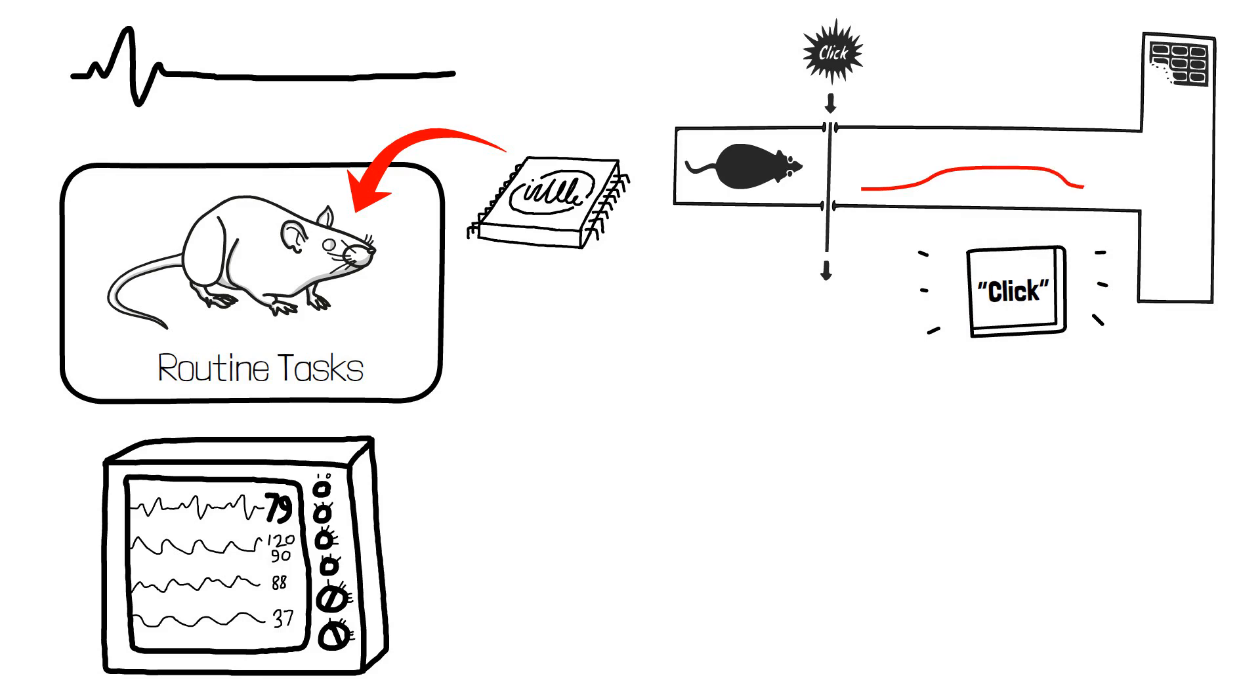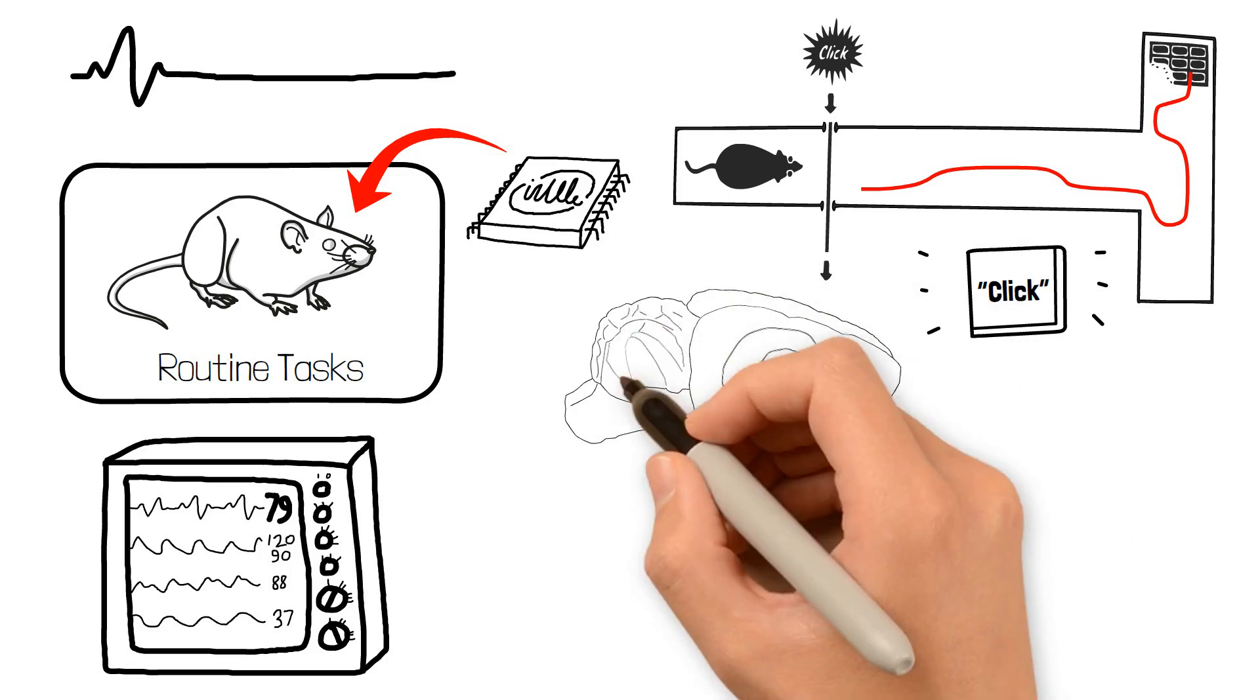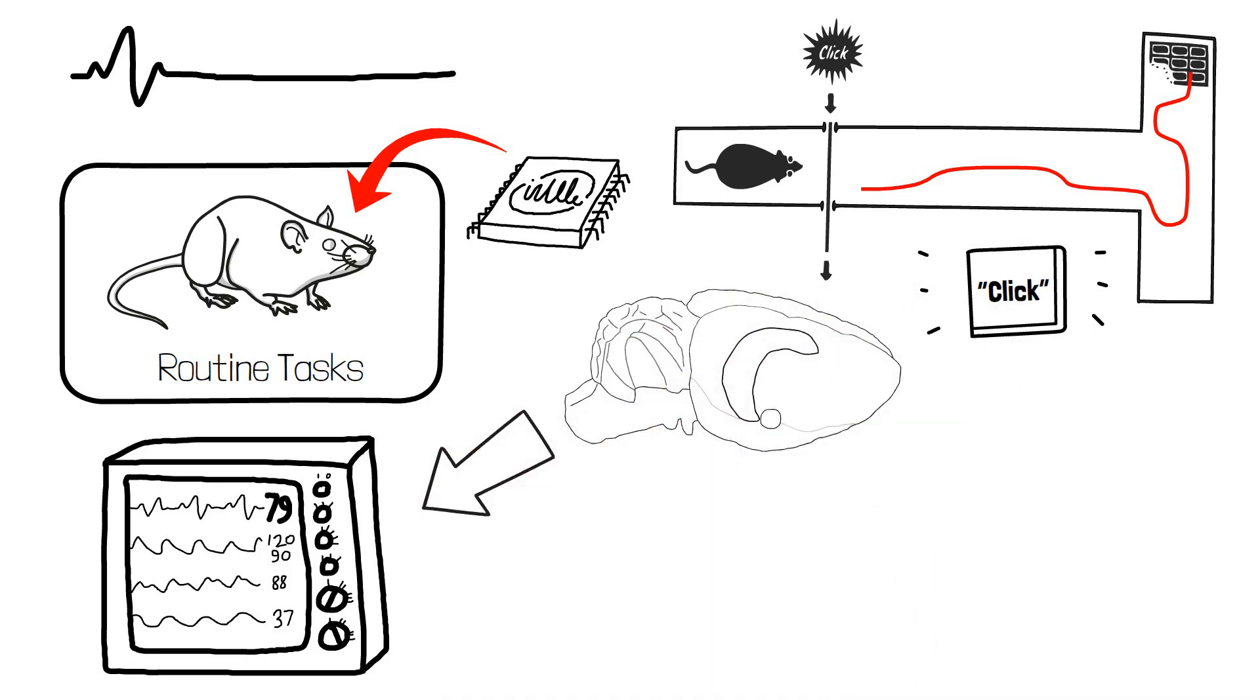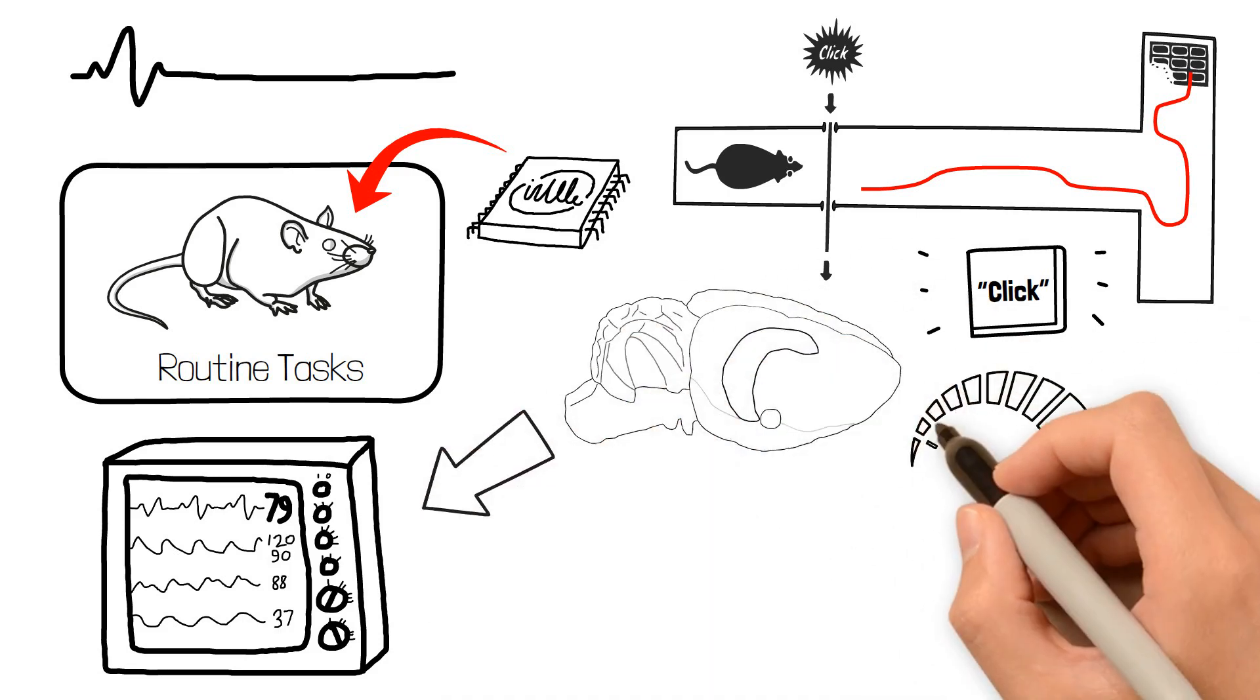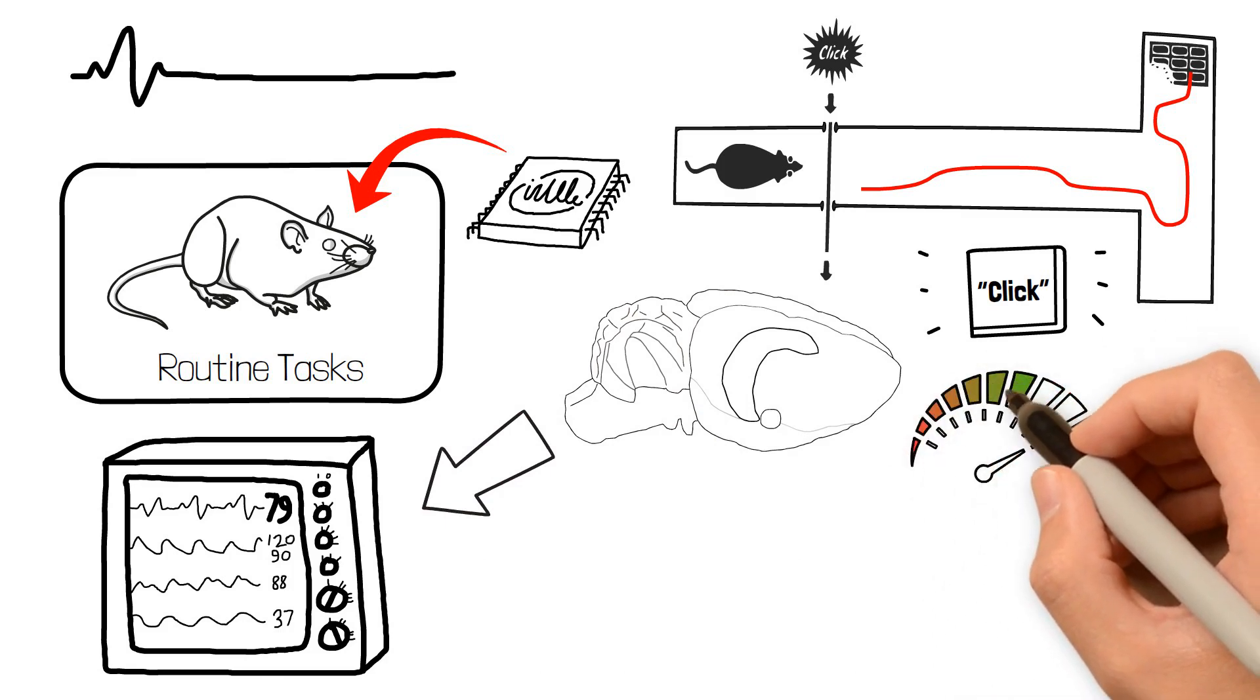Once the door disappeared, the rat would sniff around the walls, and with few errors, it would eventually find the chocolate. For a naked eye, that seemed like an extraordinary behavior until they looked at the graph of brain activity. The graph showed that the entire time the brain was working extremely hard until the rat found the chocolate.